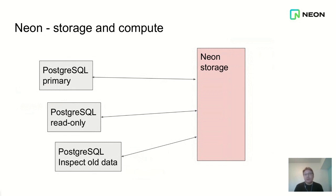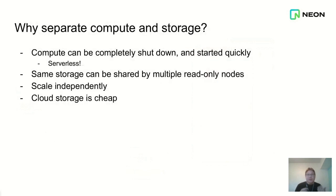You can connect your primary to it, or you can connect read-only requests to it. If one of the Postgres instances dies, you can very quickly spin up a new one, because there is no storage restoration needed — you just connect it to the storage system that's already there and up and running. So this storage system is what allows Neon to be serverless. Whenever your database is inactive for more than five minutes, we shut it down and completely remove the compute node.